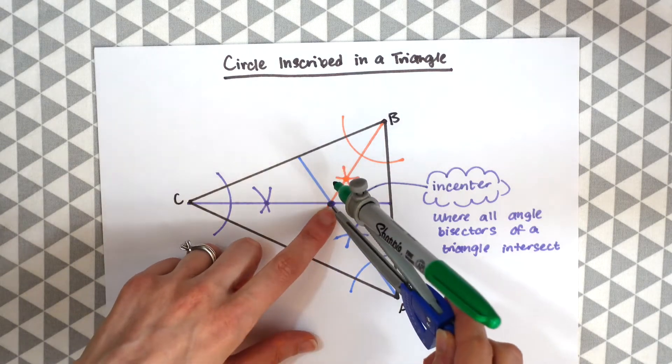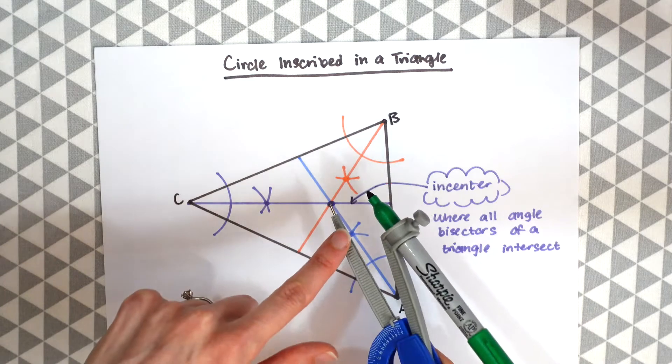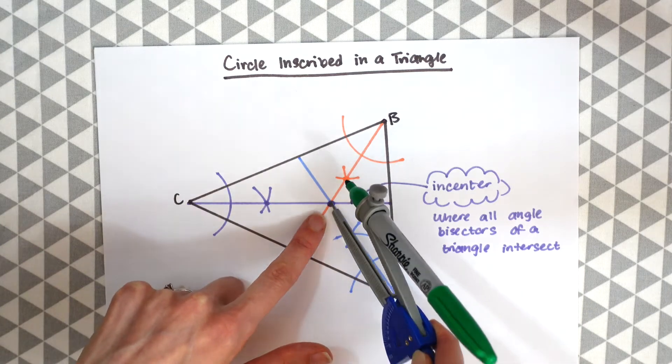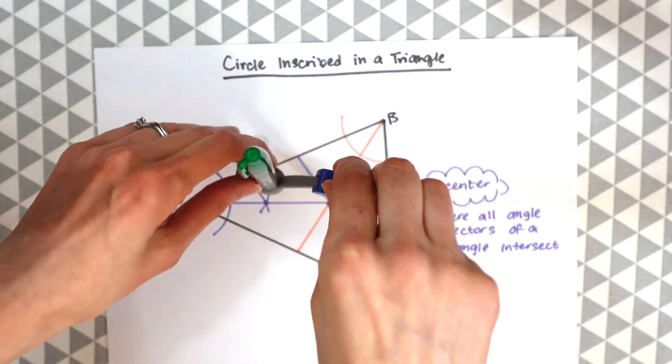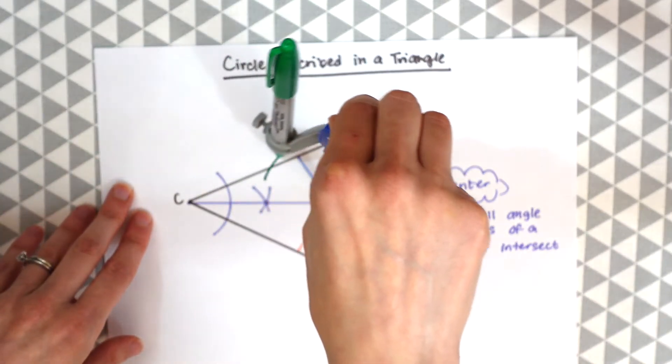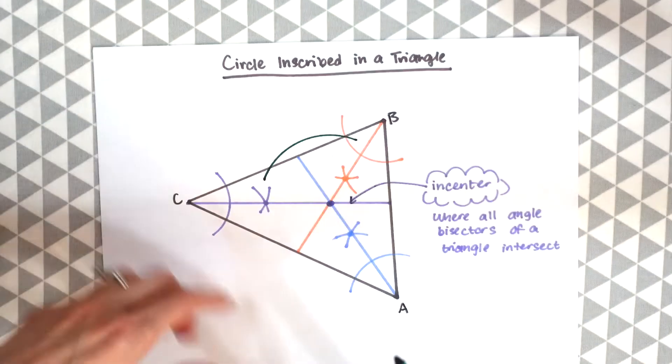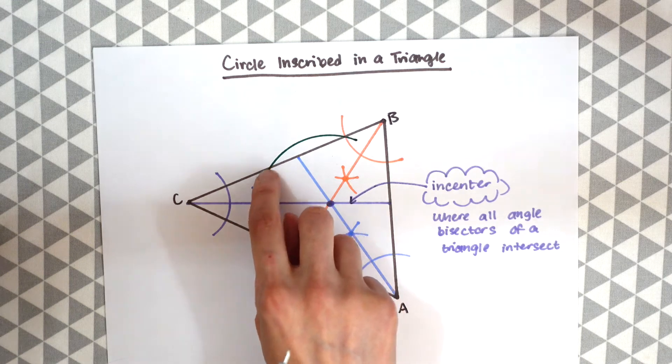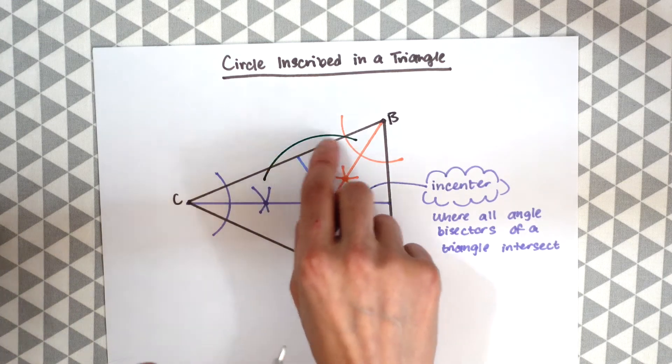We're going to put the compass right in the incenter that we just found and then make an arc, making sure to intersect the triangle on one side two times, so over here and over here.